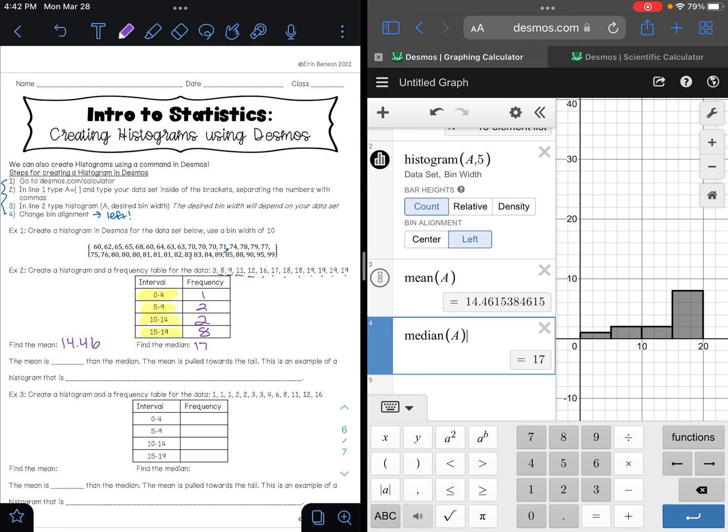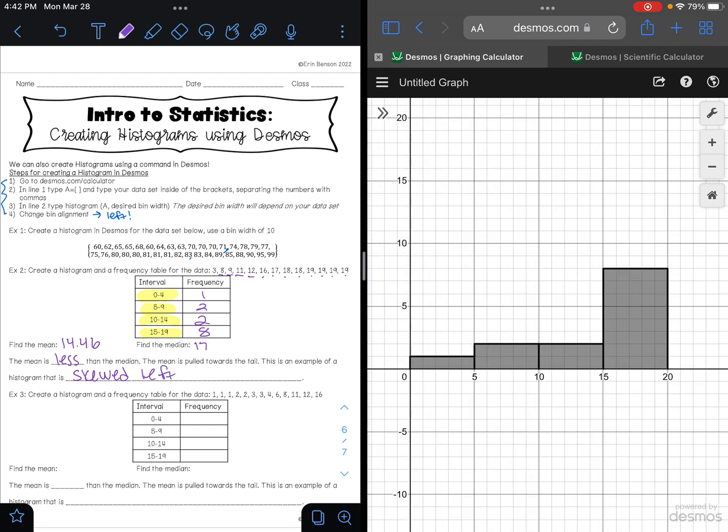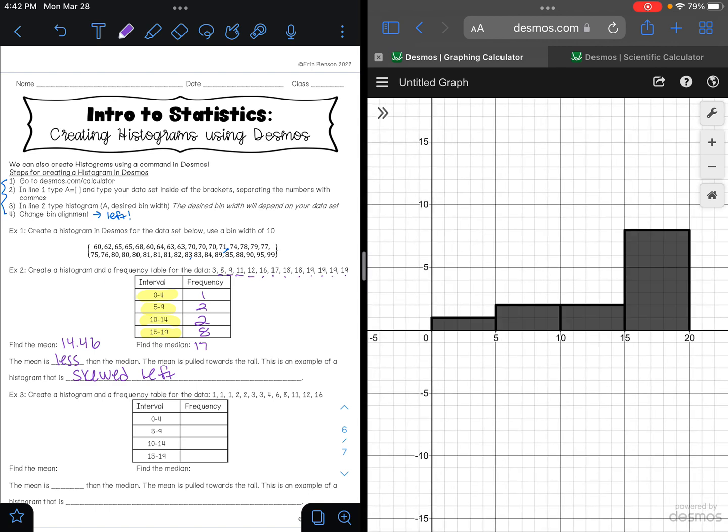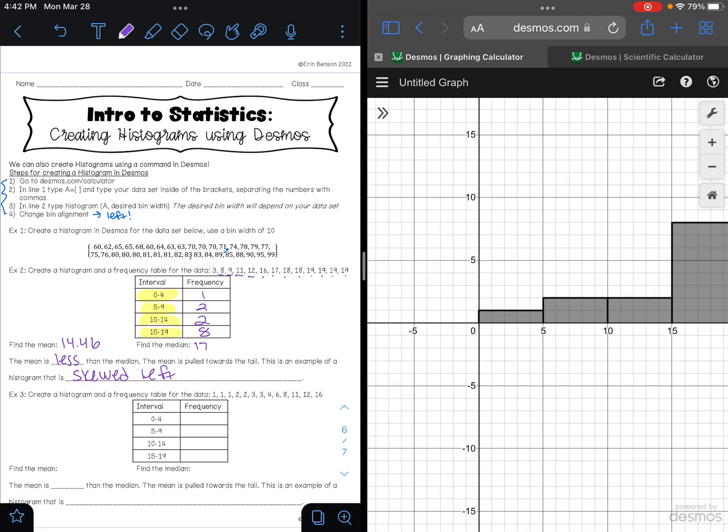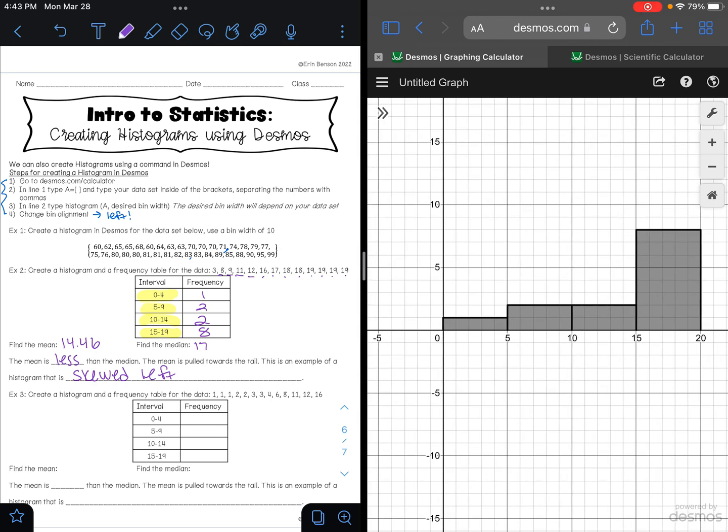So is our mean more or less than our median? Our mean is less than our median. That means the mean is being pulled towards the tail. This is an example of a histogram that is skewed left. Now it's skewed left because if you look over here at your histogram, if you were to draw your dinosaur, your dinosaur's tail would be on the left side. Your left side over here is where your negative numbers live, so this is also an example that can be said that we could say it is negatively skewed, because your tail is where the negative numbers are.